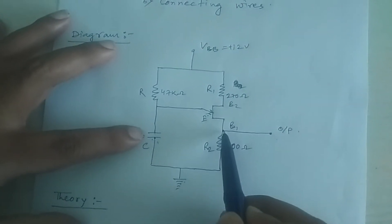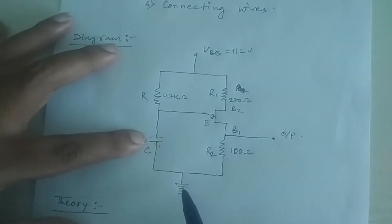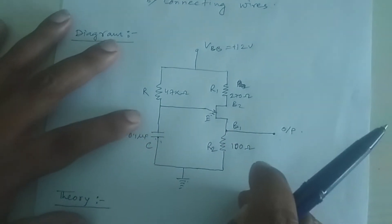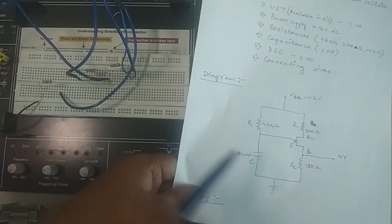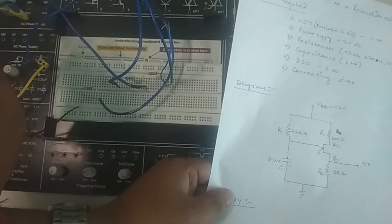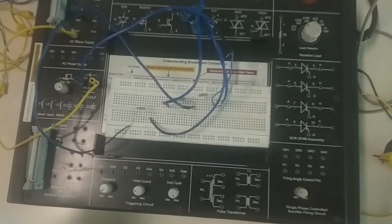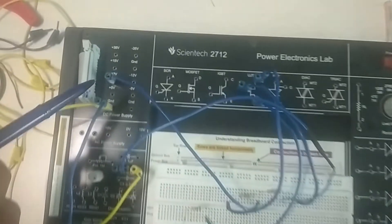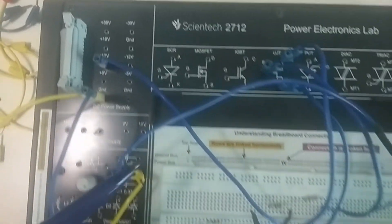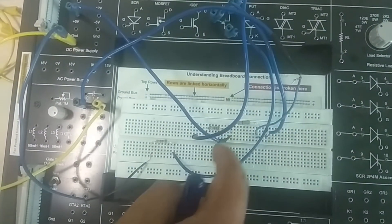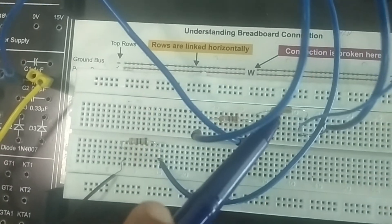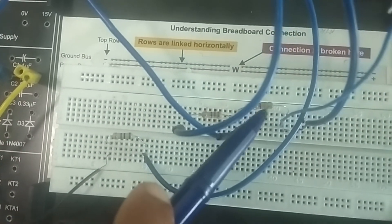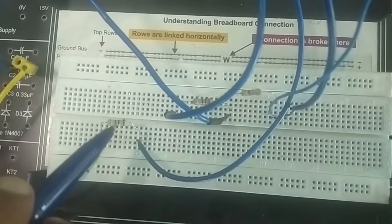The output will be measured at junction B1 and ground. Now let us see the connections. Here you can see the 12 volt power supply has been given, and it is connected to the 47K resistor. This is 47K, this is 100 ohms, and this is 270 ohms.